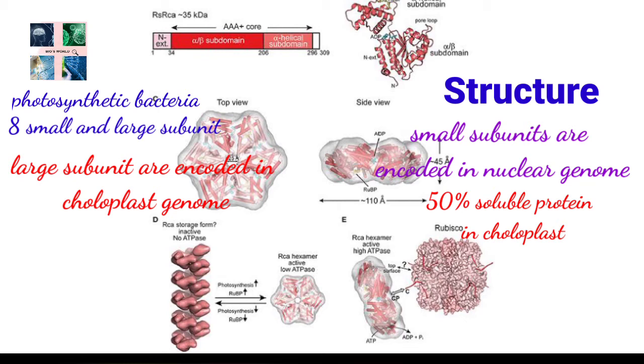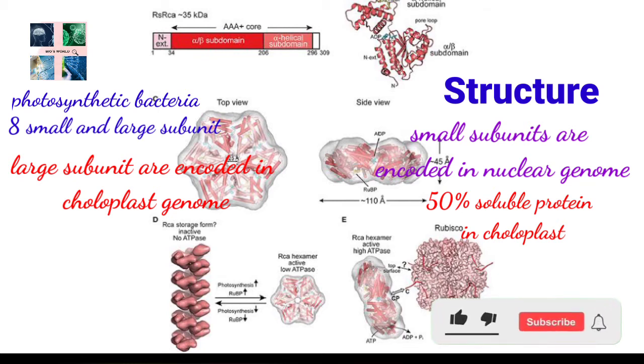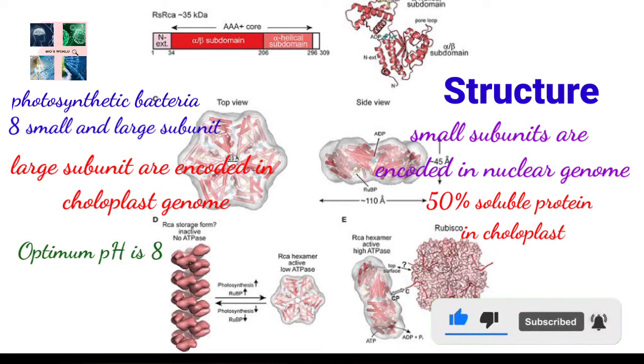Its activity is regulated by carbon dioxide, oxygen, magnesium, and also pH. The optimum pH for Rubisco activity lies around 8.